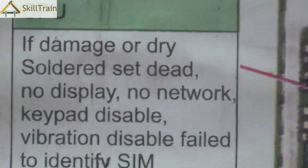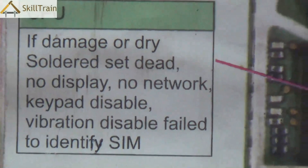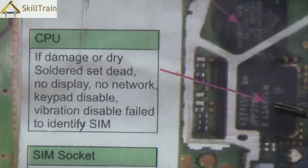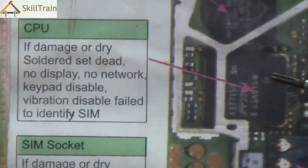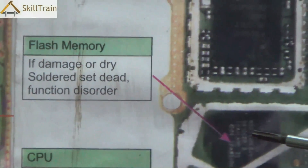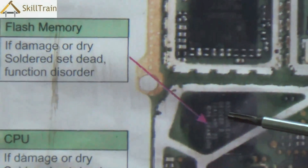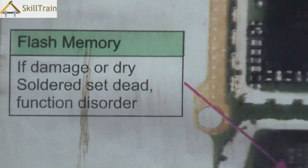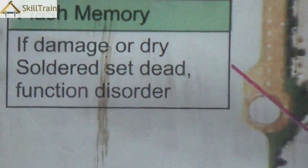Right next to that is the CPU, or central processing unit. This is the main part which controls the entire mobile phone — it gives directions to each of the components on when and what action needs to be taken. Any problem in the CPU can result in problems in multiple components including display, network, keypad, vibration, or even the SIM. Right above that is the memory IC, where the mobile phone software is saved and some internal applications are stored. If there is a problem in this part, the mobile phone might become dead or it could result in functional or application disorders.